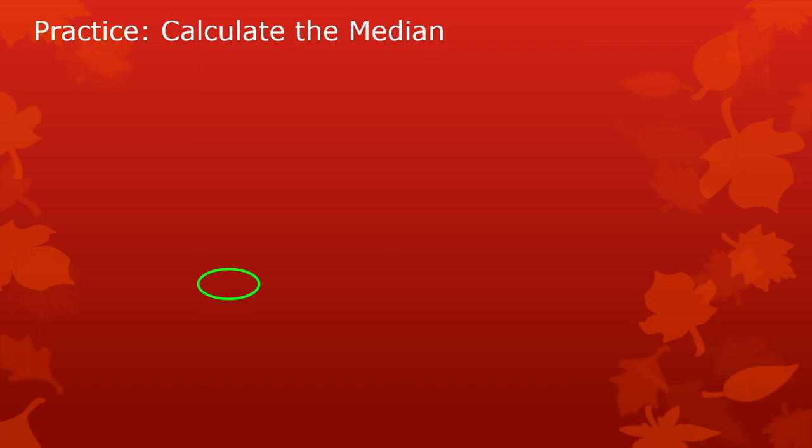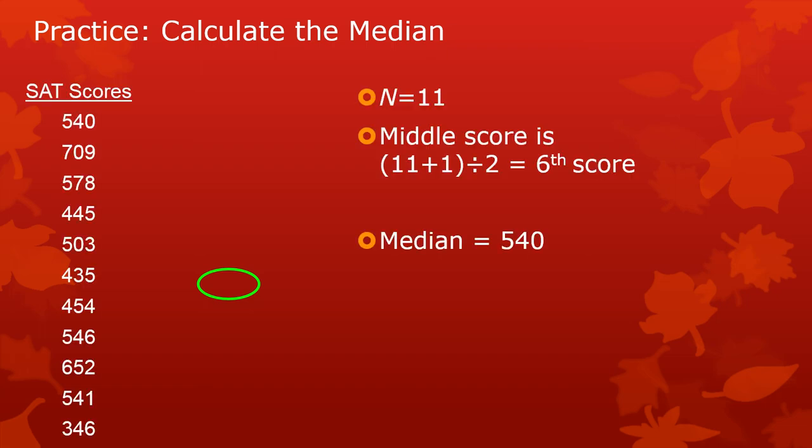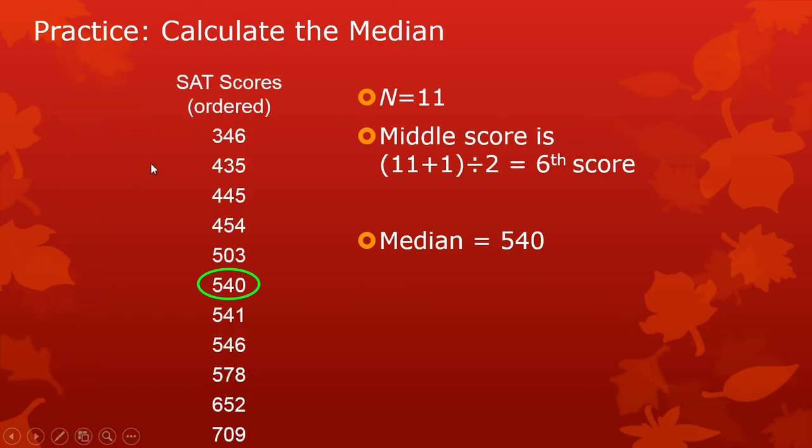Let's calculate the median. So let's say you've got here SAT scores. Let's order them. This is where you're going to find the median, right here. The way you know to find it there is you count all the scores. There are 11 of them. So the middle score is 11 plus 1, 12, divided by 2. It's going to be the sixth score. 1, 2, 3, 4, 5, 6. There we go. So the sixth score is 540. So the median is 540. So now you know how to calculate medians.